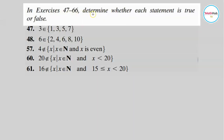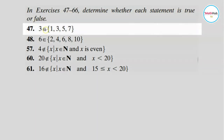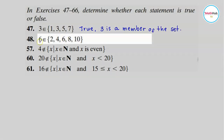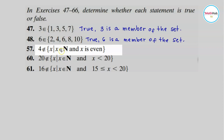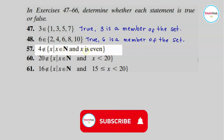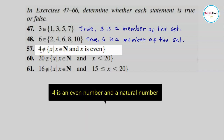Now we will determine whether each statement is true or false. First: is three an element of this set? Yes, three is a member of the set, so this is true. Next: is six an element of this set? Yes, six is a member of the set, so this is again true. What about this one — four is not an element of the set of even natural numbers. Four is an even number, so it should be in the set, making this statement false.